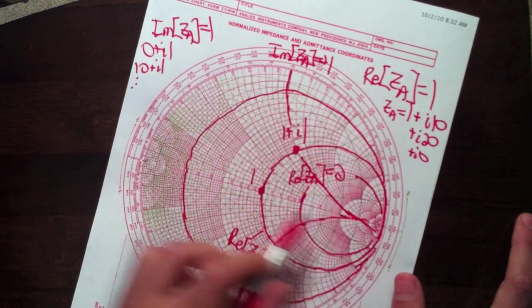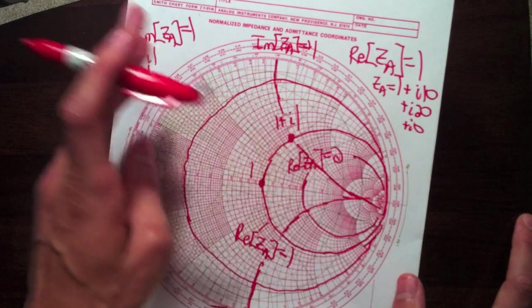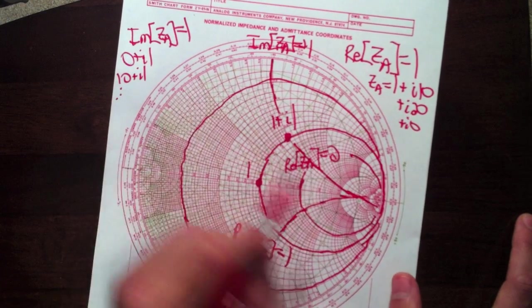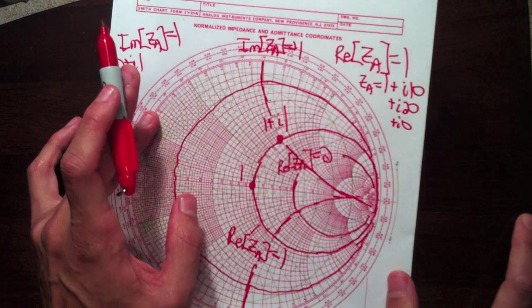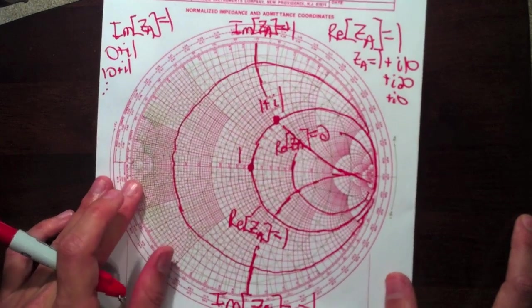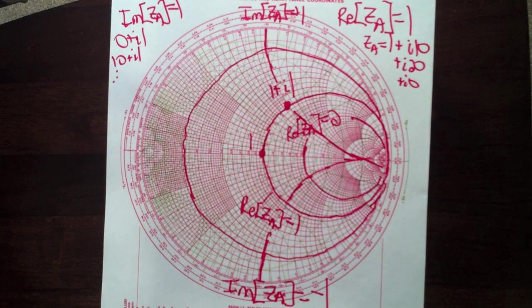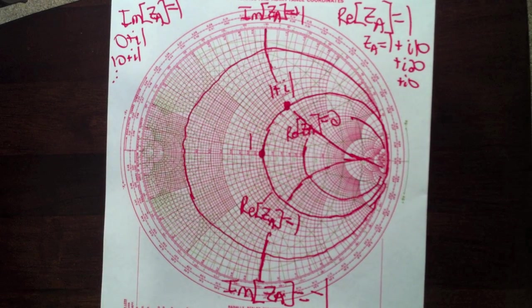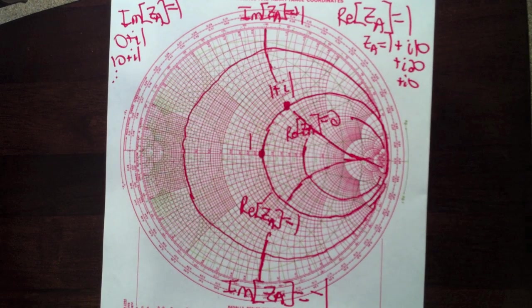So all of these curves on here just correspond to simple expression where the real part or the imaginary part of the impedance is constant. So that's where all these curves come from. Now, it might not seem like that is very helpful, but it turns out that's extremely useful for impedance matching and visualizing what's going on.